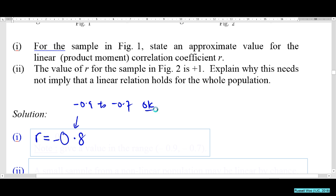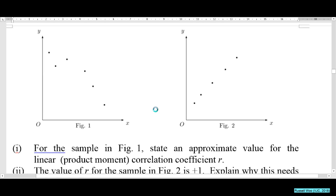This is just an estimate. It makes sense because looking at the diagram, it's definitely a negative number since it is downward sloping.